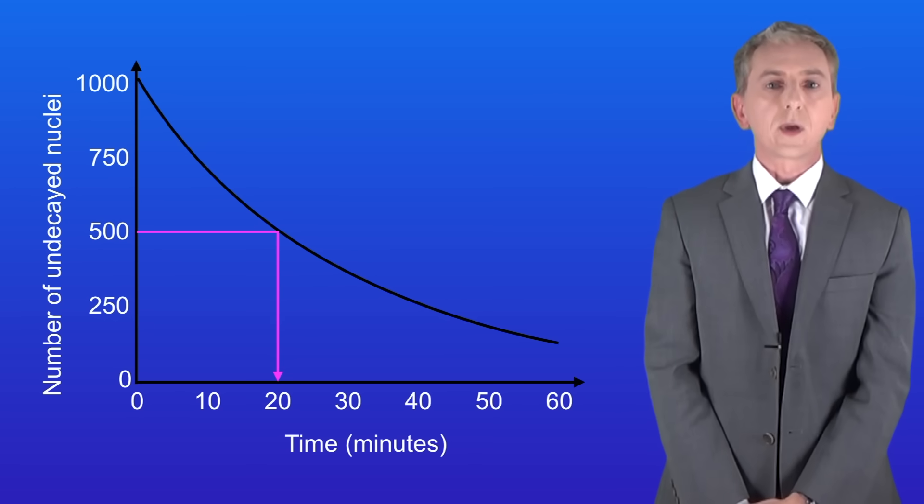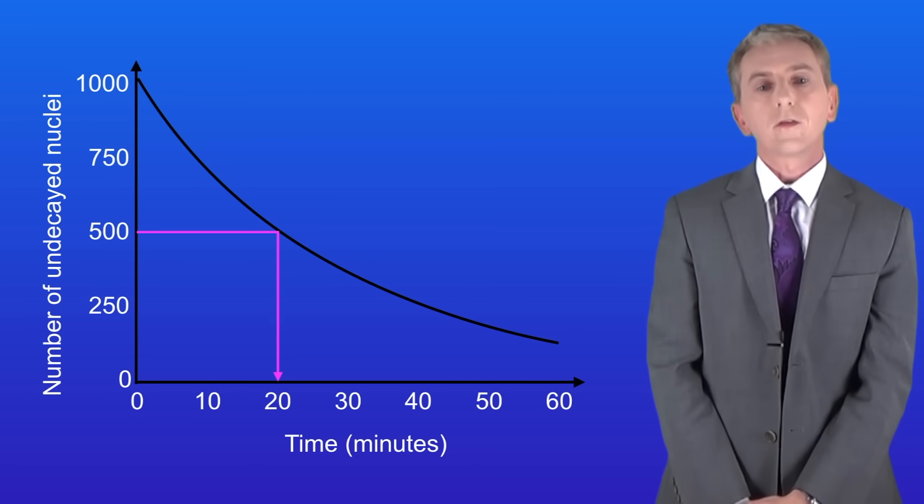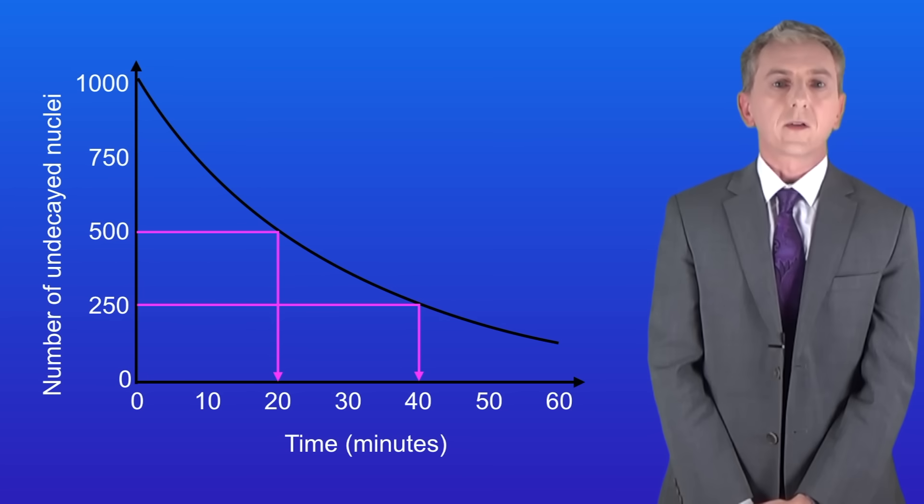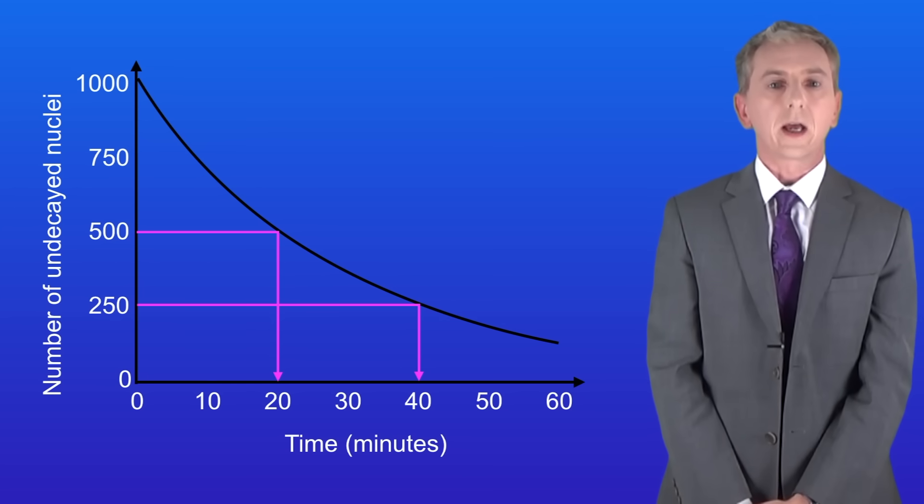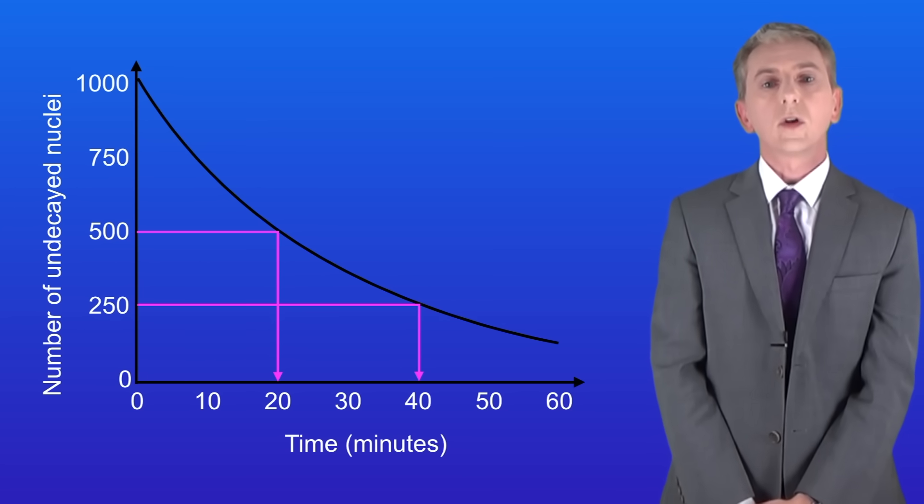Looking at the graph we can see that it takes 20 minutes for the number of nuclei to fall from 1000 to 500. So the half-life is 20 minutes. After another 20 minutes we can see that the number of undecayed nuclei has fallen by half again to 250.